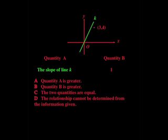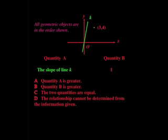The first thing we notice is that line k doesn't really touch the 3, 4 point. We can see a little space between them. And that brings us to one of the official rules on the quantitative comparison section. All geometric objects are in the order shown. But since the k line goes through the origin where x and y cross, the k line could actually shift.